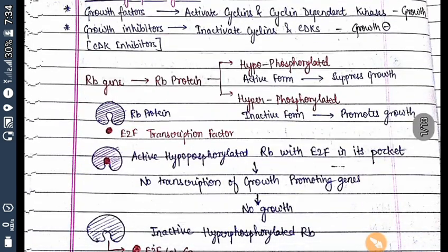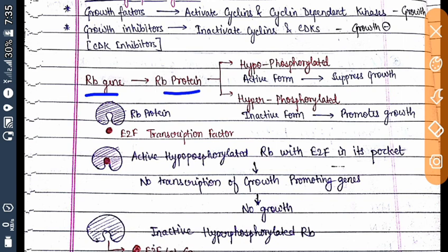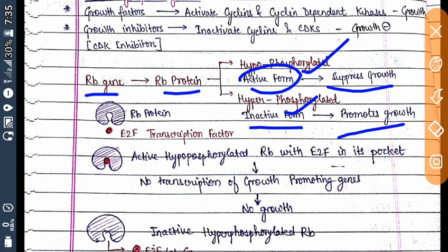The RB gene makes RB protein — retinoblastoma protein. If the retinoblastoma protein is hypophosphorylated, it is in its active form and will suppress growth, because the retinoblastoma gene is a tumor suppressor gene. If it is hyperphosphorylated, it will be in inactive form and will promote growth.